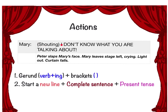The second way: if the action is really complicated and one simple gerund cannot explain it, start a new line and use a complete sentence in present tense to write all the actions. Doing it this way, you can give actions to more than one character at once. For example: 'Peter slaps Mary's face and Mary leaves stage left crying. Light out. Curtain falls.' Write it all together on a separate line, and do not write a character name before this action since it is a complete sentence.